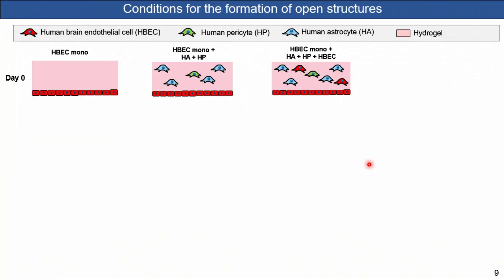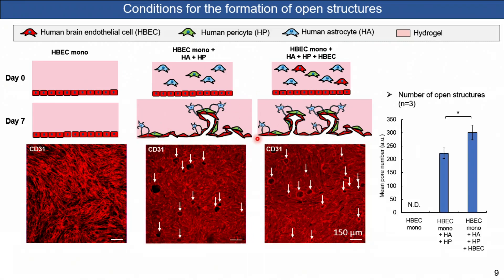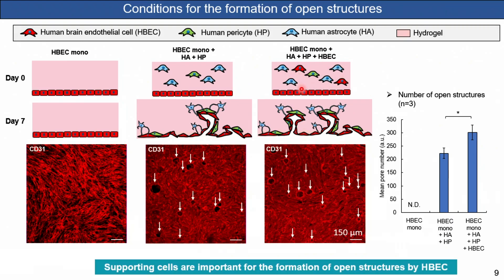Here is a video showing a closer view of this open structure. When we incubate a dextran solution at the bottom of the hydrogel and allow it to diffuse in, the dextran demonstrates the perfusibility of this open structure. We then wanted to investigate what could trigger the formation of this open structure. We designed three configurations: one with hydrogel with no cells inside and just a second seeding of endothelial cells; one with only astrocytes and pericytes inside; and one with astrocytes, pericytes, and endothelial cells inside. After seven-day culture, open structures formed in the latter two models, and quantification showed the number of open structures was highest when endothelial cells were also included inside the hydrogel, suggesting that supporting cells help promote open structure formation.